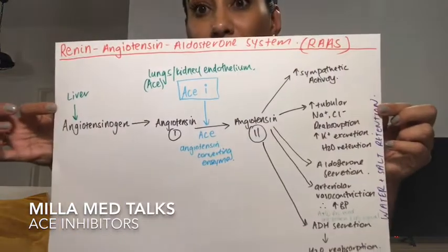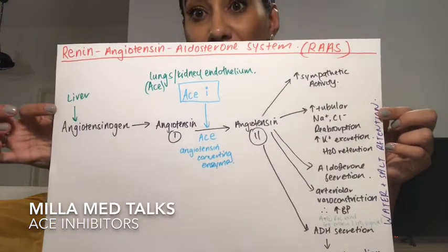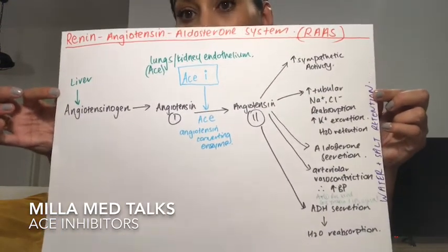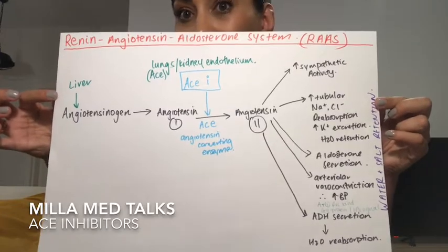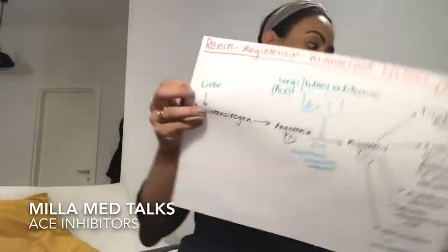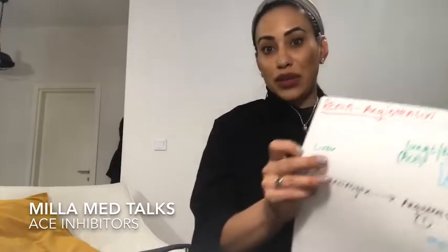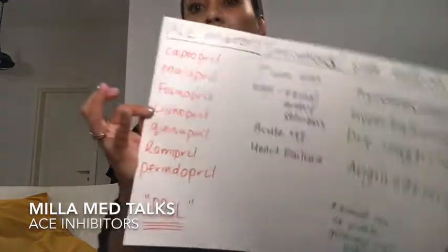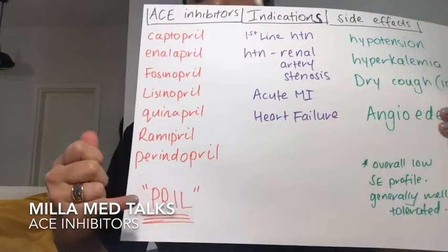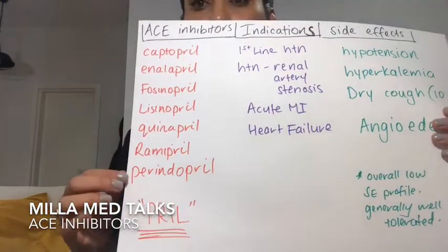So that's the renin-angiotensin-aldosterone system — very important to know this to gain a thorough understanding of how ACE inhibitors work. What are ACE inhibitors? The easiest way to remember these is that they all end in '-pril'.